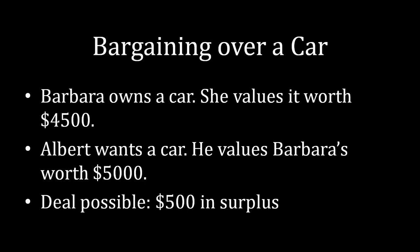If Barbara accepts, Albert buys the car at that price — he writes a check for X dollars and Barbara takes it. Or Barbara can say she doesn't like that offer, in which case Albert does not purchase the vehicle and Barbara drives away with her car. Notice that when Albert and Barbara are negotiating, deals should be possible because there's $500 in surplus — Albert values the vehicle at $5,000, which is $500 more than Barbara's valuation. The question is which deal they wind up on based on the ultimatum game.